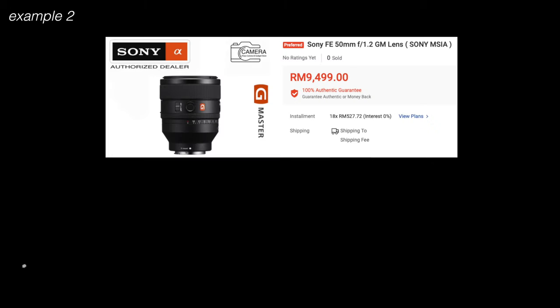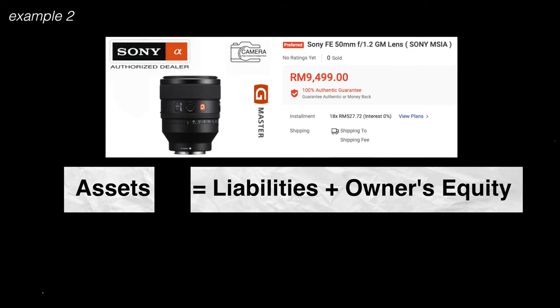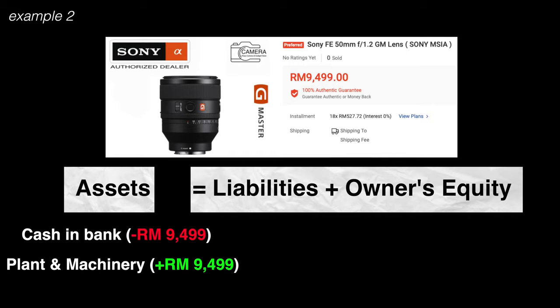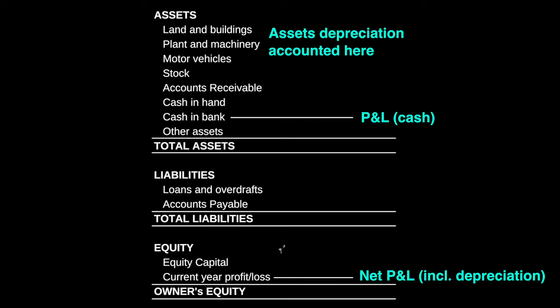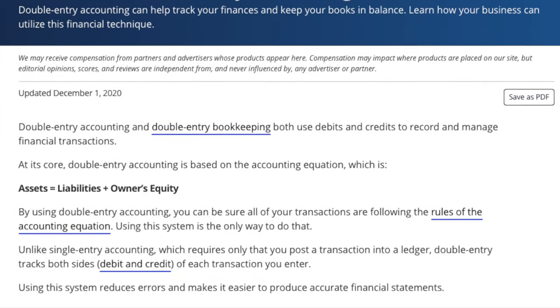If I were to inject RM20,000 cash into my business from my personal account, the cash under assets on the left will increase by RM20,000, and the equity capital value under owner's equity on the right will also increase by RM20,000. Net difference of left and right will be zero — hence the balance sheet is balanced. Another example: if I were to buy a RM9,500 camera lens with cash from my business bank account, I will reduce RM9,500 from cash in bank under assets, and increase RM9,500 in the value of plant and machinery under fixed assets. Net change to assets is zero and the balance sheet is balanced. Same goes to your revenue — when you receive it, you receive it as cash under the asset column, and on the other hand you will increase or reduce under owner's equity in the form of your profit and loss, inclusive of non-cash items such as depreciation expense. I hope you get the gist of it — just try and build your own balance sheet on Excel; there are tons of examples online.